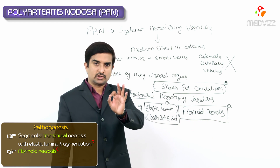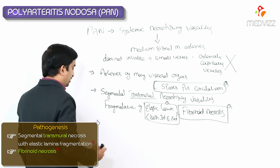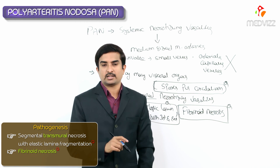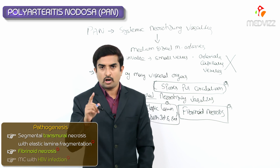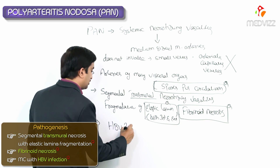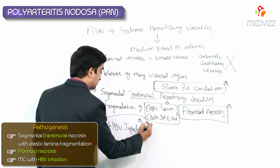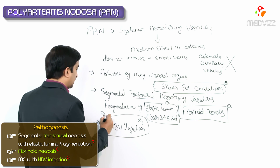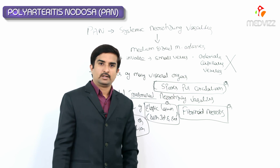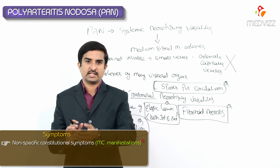Another important MCQ point: Polyarteritis Nodosa is more commonly associated with HBV (Hepatitis B virus) infection.